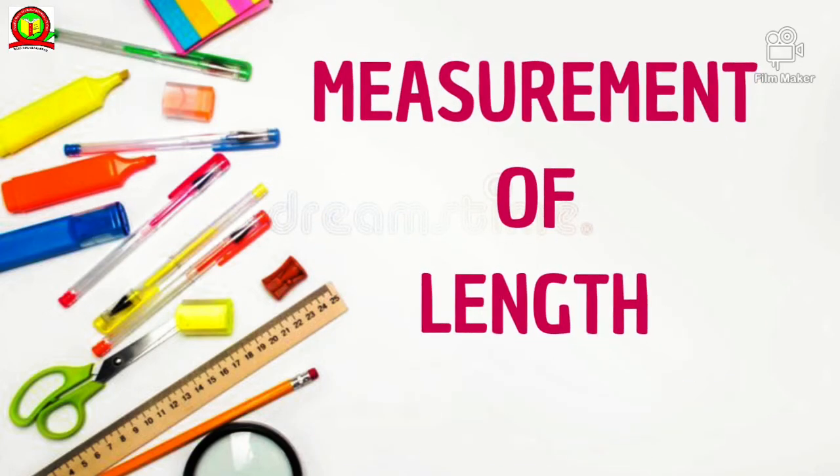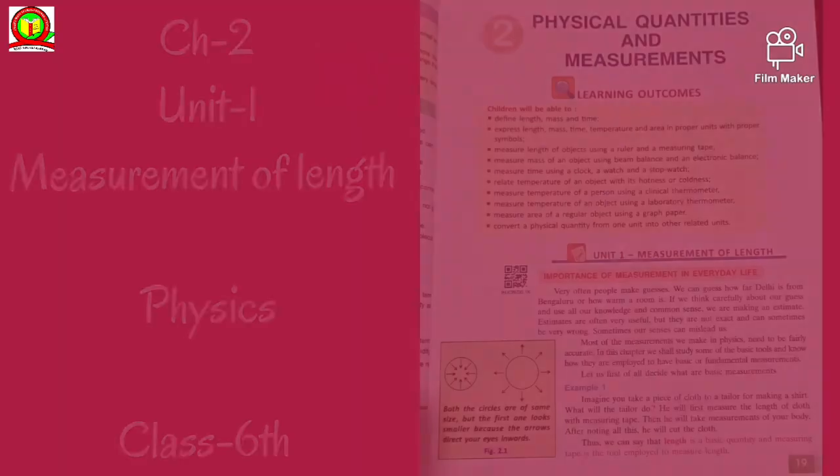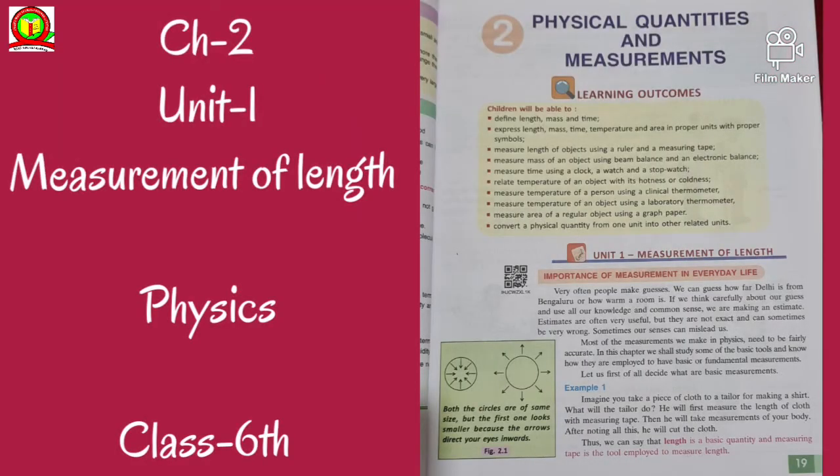Hello children, today we are going to start our second chapter, that is Physical Quantities and Measurements. In this chapter, we will cover the first unit that is Measurement of Length. This chapter is there in your first unit syllabus. Till now you were reading a subject known as science, now it has been distributed into three groups: physics, chemistry, and biology.